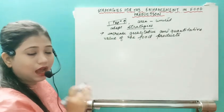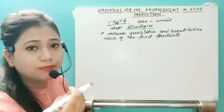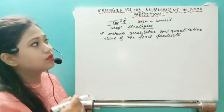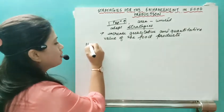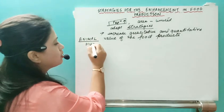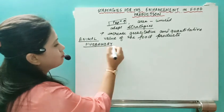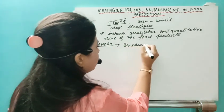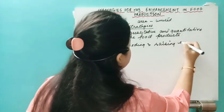These problems are directly associated with animal husbandry and plant breeding, which we will study in this chapter. Animal husbandry means breeding and raising livestock.